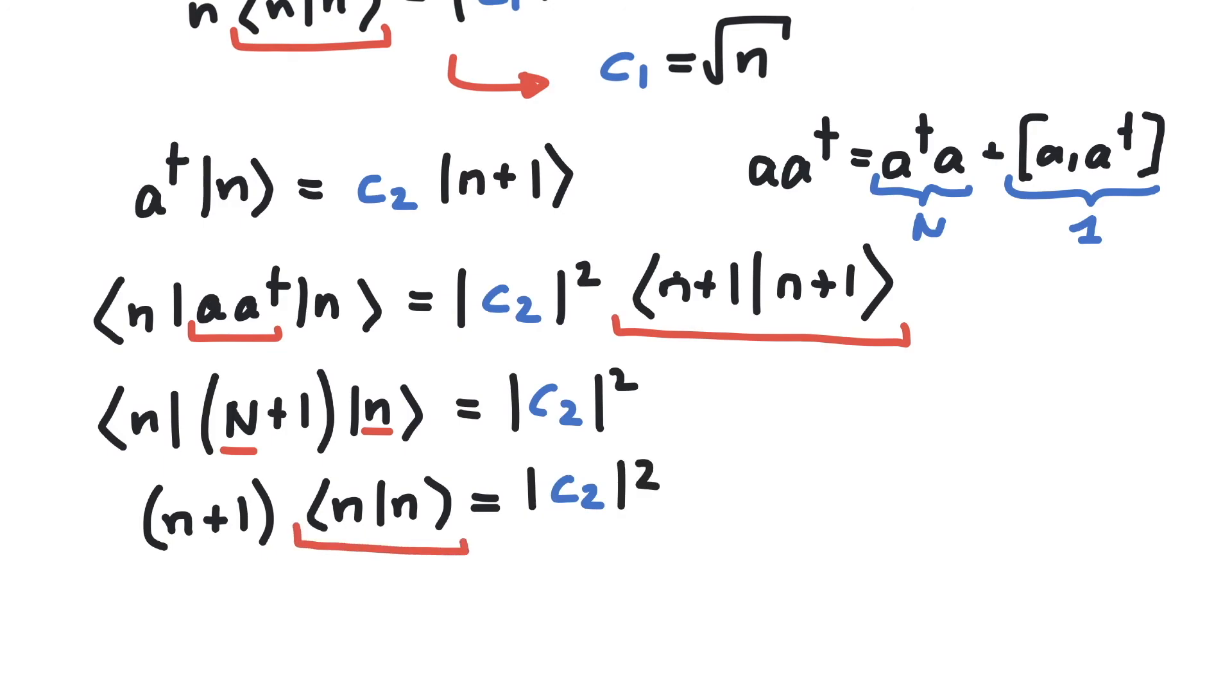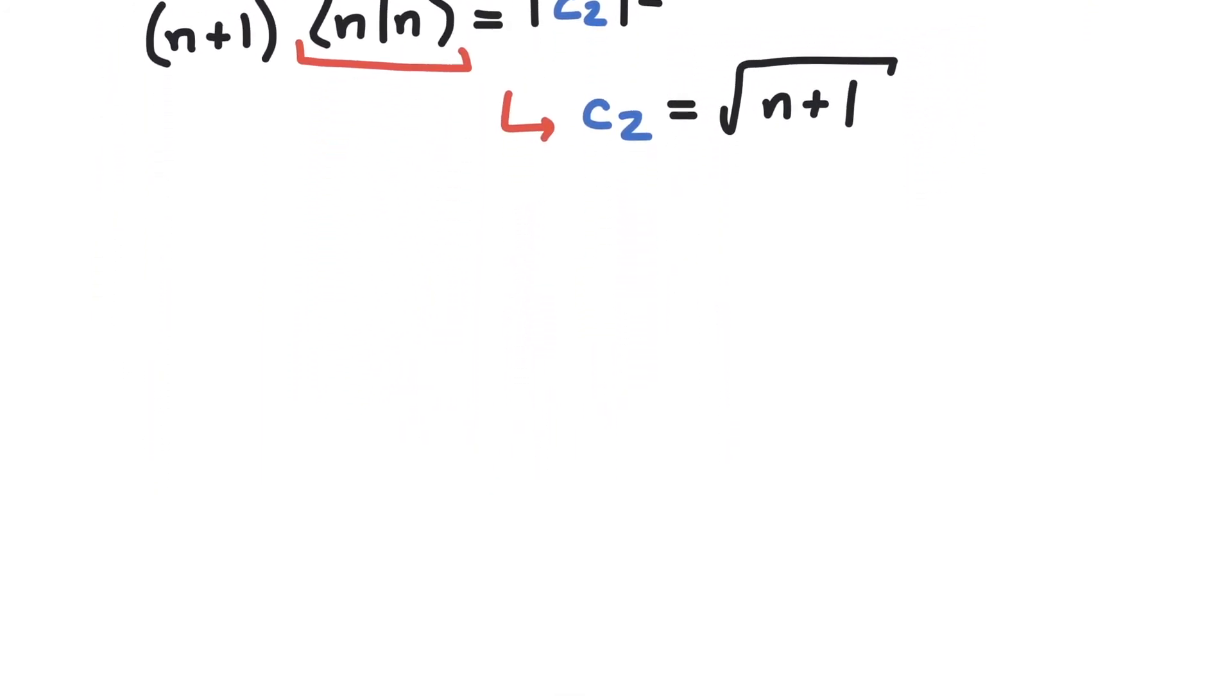Remember, these states are normalized, so now we know that c2 is equal to the square root of n plus 1. Let's do some examples. First, let's write our equations using the constants that we calculated.